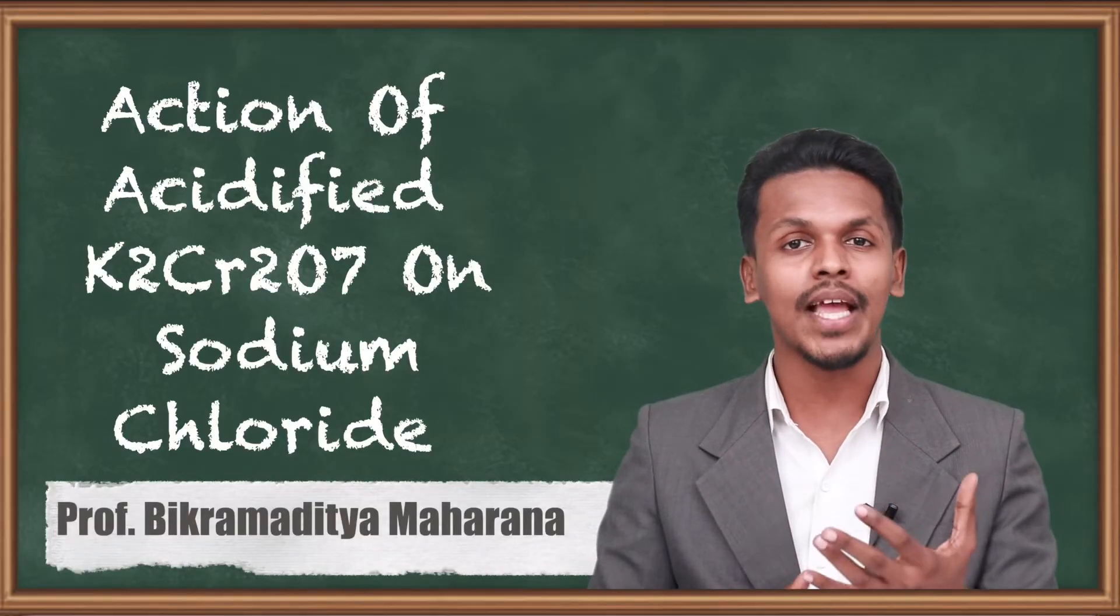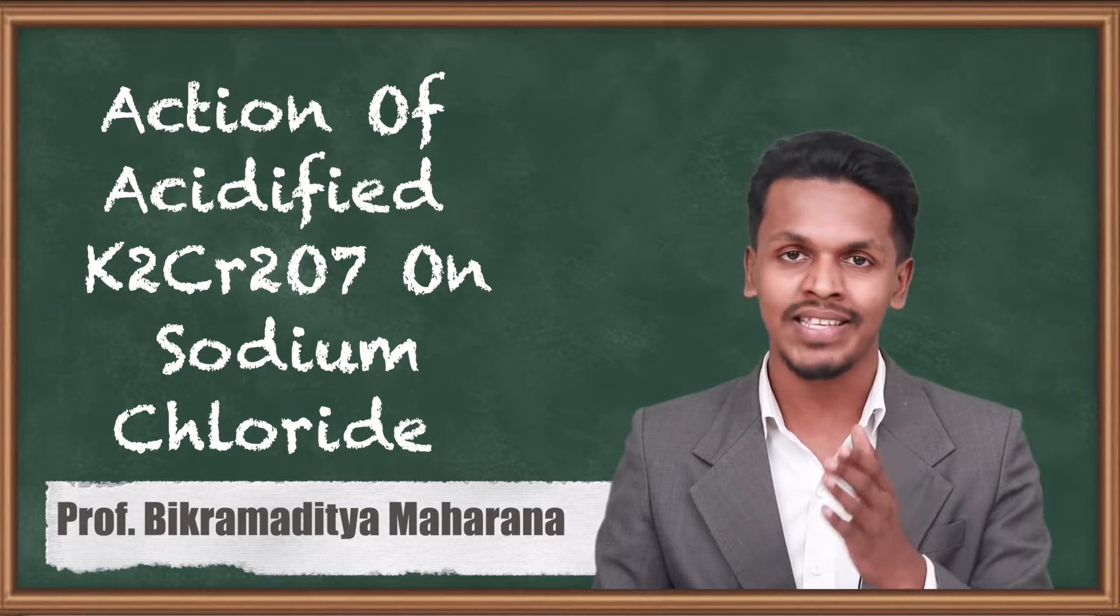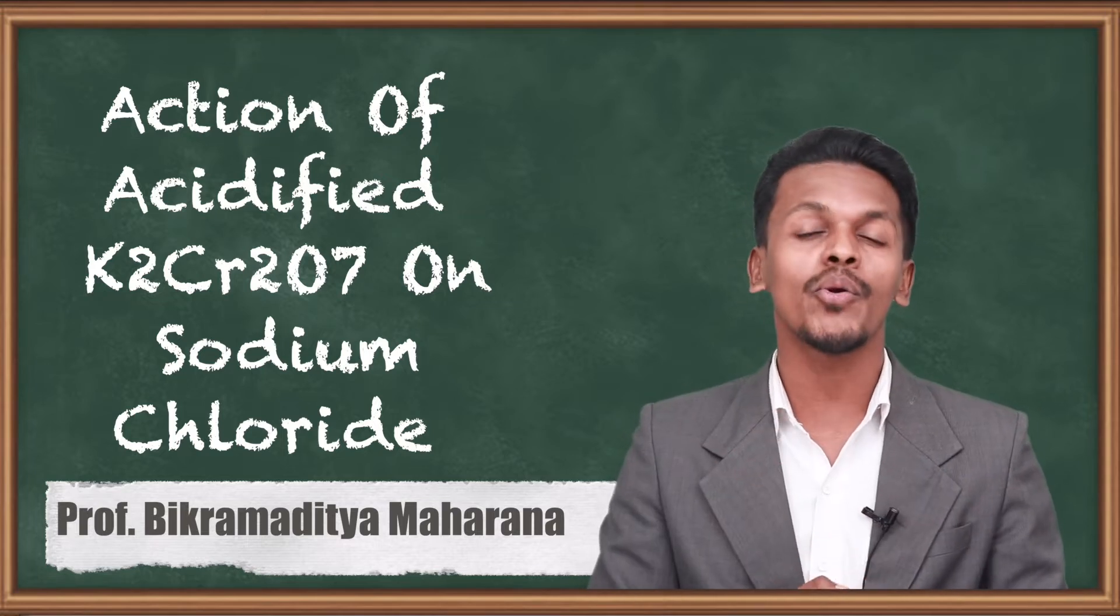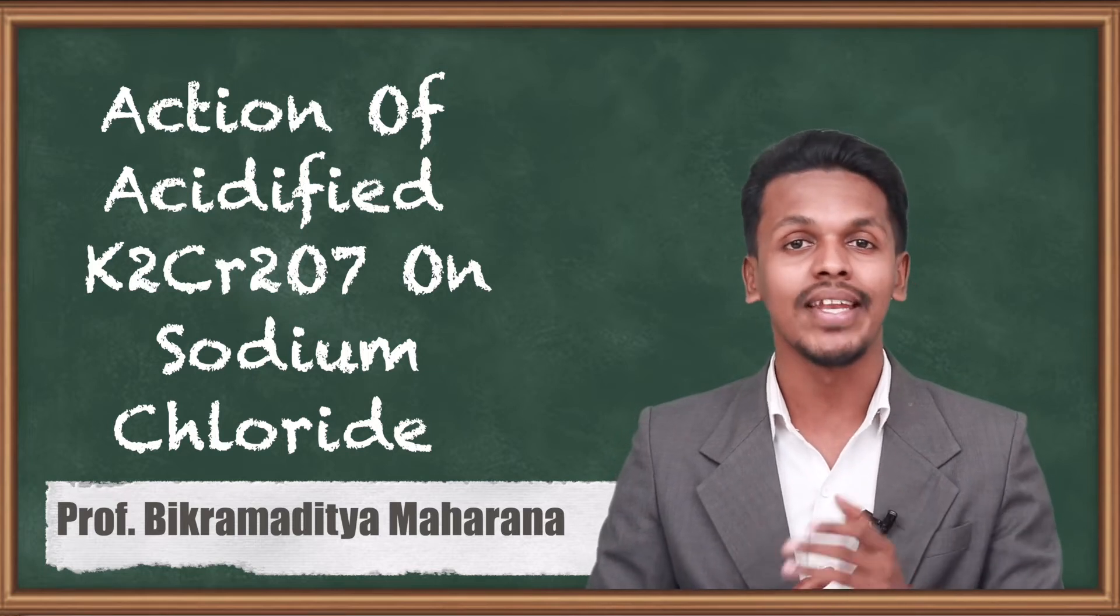Hello friends, in the previous topic we have discussed about the action of acidified K2Cr2O7 on primary as well as secondary alcohol. Now in this topic we are going to talk about the action of acidified K2Cr2O7 on NaCl, that is sodium chloride.